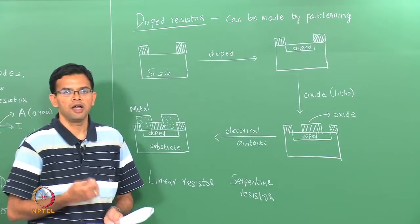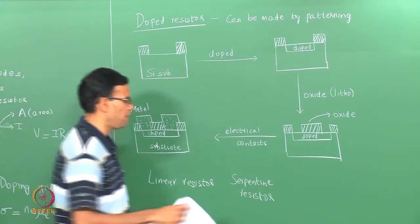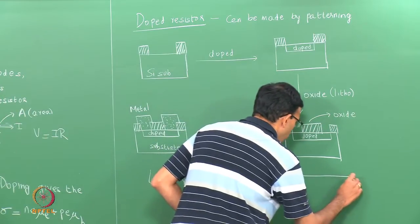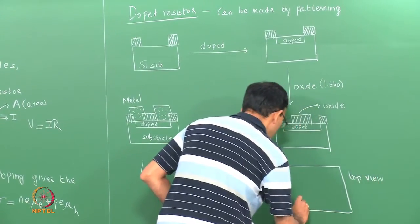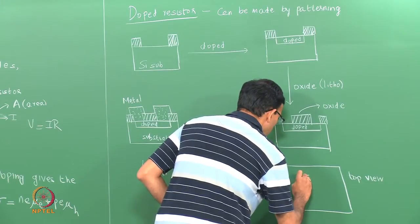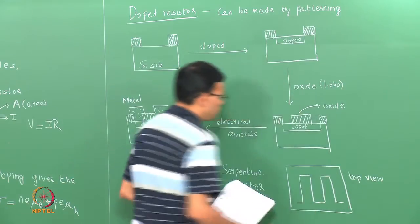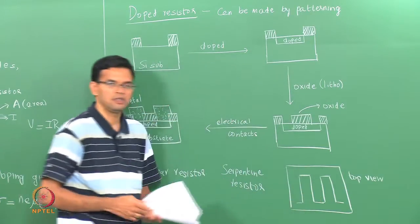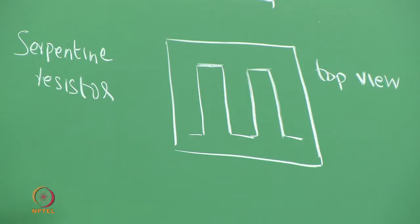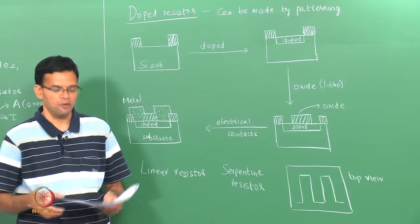The serpentine resistor is again just determined by how you create the lithographic pattern. If your pattern is not linear but in a serpentine fashion — just looking from the top — you could create a line where the line essentially goes in a serpentine fashion, and you could create a serpentine resistor. The different resistor designs basically depend upon the complexity of the lithographic mask you use.